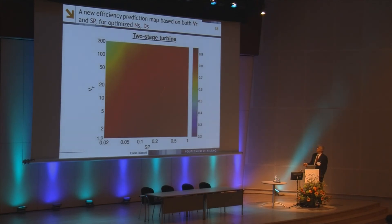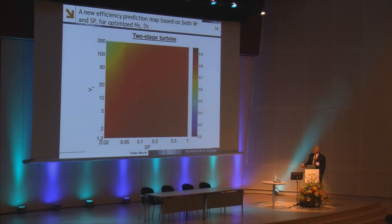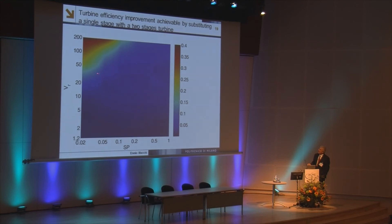Our correlation is extended to two-stage turbines as well. For a two-stage turbine, the region where you can get very high efficiency is larger than for a single stage. The efficiency improvement graph lets you decide whether to build a single-stage or two-stage machine — for instance, in certain situations you can gain maybe 15 points of efficiency by choosing a two-stage instead of single-stage turbine.